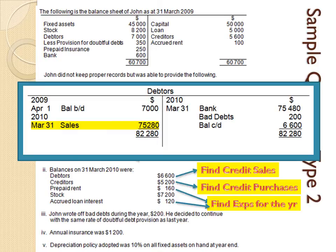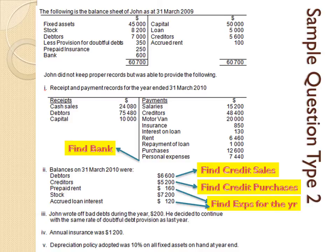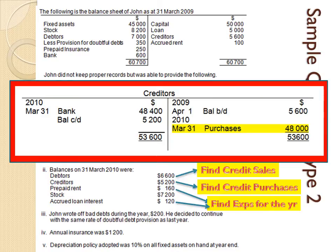Add credit sales to any cash sales to get total sales. For the creditors control account: opening balance $5,600, closing balance $5,200, and we paid creditors $48,400. There is no other creditor information, so working backwards gives credit purchases of $48,000. Add that to any cash purchases to get total purchases.